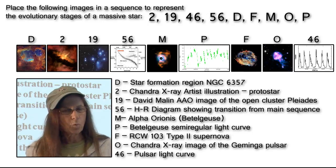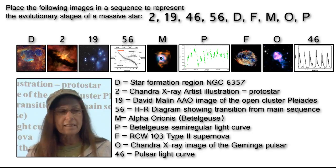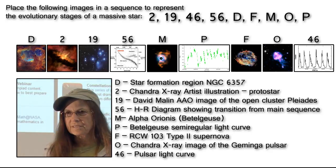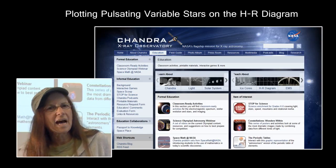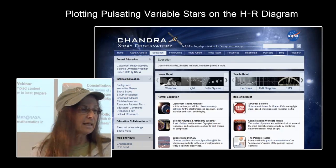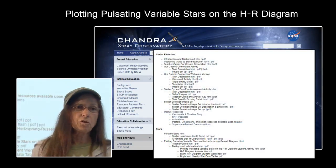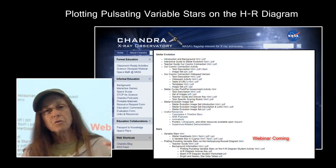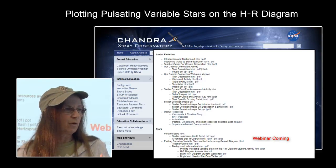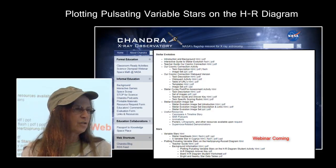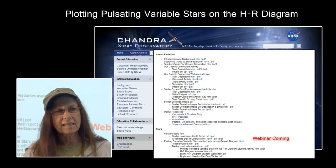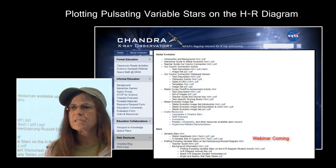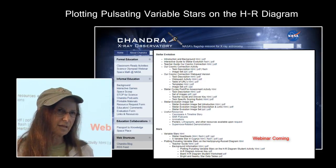As you work more and more images and light curves into the sequences, the more you understand how it all fits together. When you go back to the Chandra website, go to the education menu and scroll down to Stellar Evolution. Underneath the stellar evolution materials already discussed — and webinars will be posted there as we get those together — it says stars, variable stars, and plotting pulsating variable stars on the HR diagram.